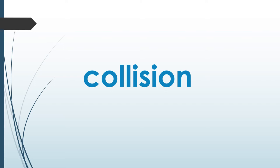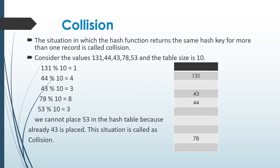Hello everyone. In this video I am going to explain about collision. What is collision? The situation in which the hash function returns the same hash key for more than one record is known as collision.